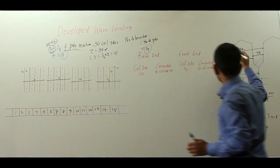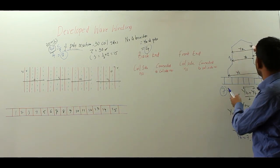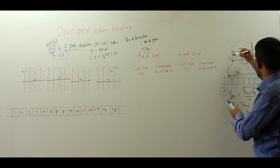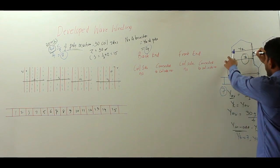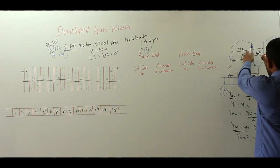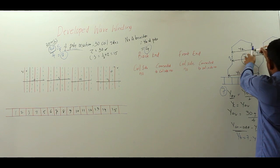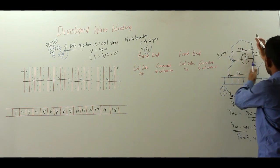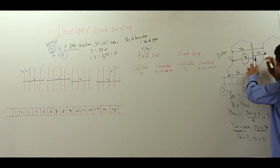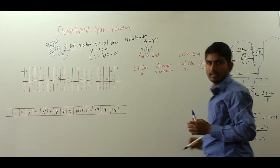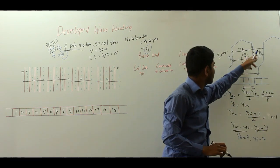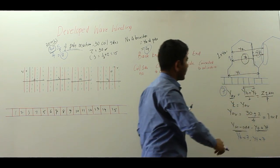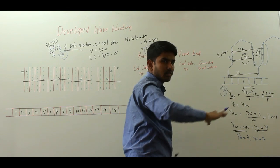Coil side 1 is at the starting end, and at the distance of YB we reach the finishing end coil side. So 1 plus YB — with YB equal to 7 — gives coil side number 8. Now for coil side 8 at the front end, adding YF gives the next coil side. In this way you can trace all the coil side connections.